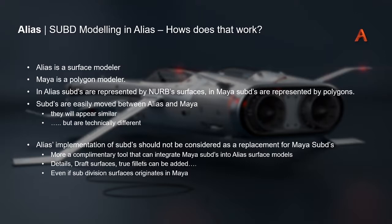Both still use subdivision algorithms but create different types of geometry. You can move easily between Alias and Maya — take geometry from Alias into Maya and vice versa — but they will appear similar while being technically different. The implementation in Alias is not a replacement for Maya; it's complementary. It's taking sub-Ds into Alias for adding details, draft surfaces, true fillets with radii, and details you would usually do visually by eye in Maya.